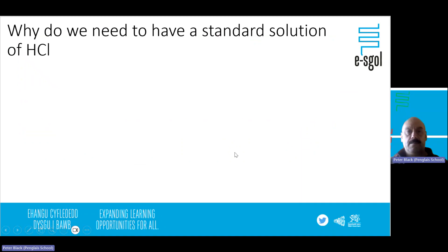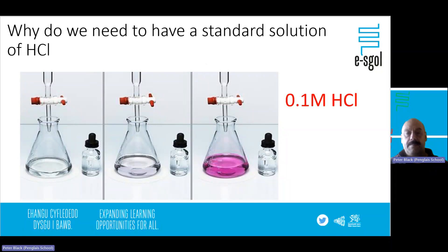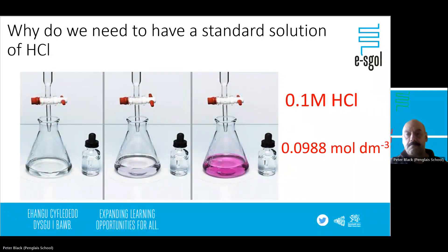In this practical we're standardising hydrochloric acid using anhydrous sodium carbonate. Why do we need a standard solution of HCl? We use HCl to find the concentration of other things, like a base. The problem is that lab reagent HCl marked as 0.1 molar isn't accurate enough for titration. We need a more precise concentration — for example, 0.0988 mol dm⁻³ — so our moles calculation is much more accurate.